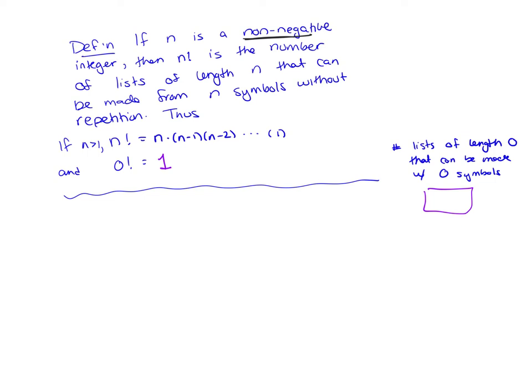Now, that might not be a very satisfying answer. You'd be like, no, but you didn't do anything. Therefore, there's 0 lists, and I can see why you might think that. But I want to try to convince you one other way that this is the appropriate way to define 0 factorial.